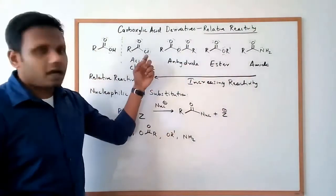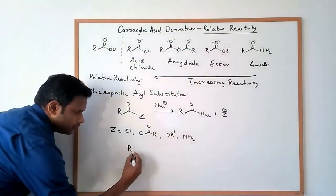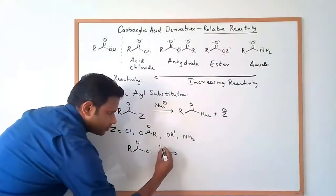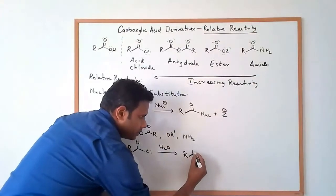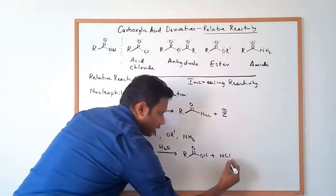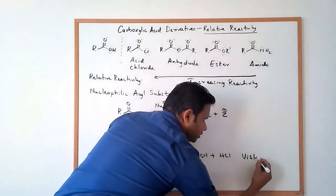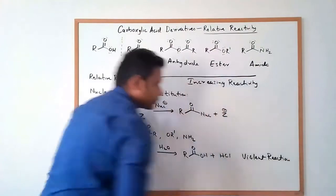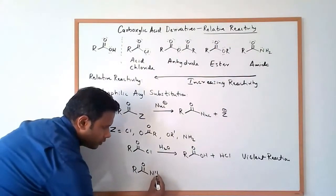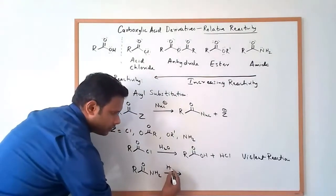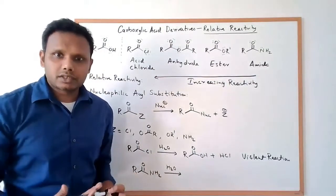A classic example is the hydrolysis of these compounds, of these derivatives. An acid chloride can react with water at room temperature very violently. And what that produces is a carboxylic acid plus HCl gas. So the hydroxyl from water substitutes for the chlorine. This is a violent reaction. An amide, on the other hand, would not react with water under ambient conditions. If you take some amide along with water at room temperature, it's just going to sit there — no reaction.